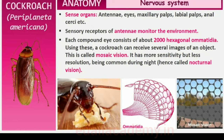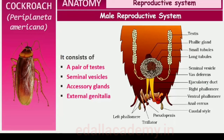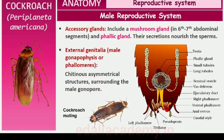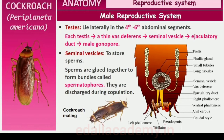Cockroaches are dioecious and both sexes have well-developed reproductive organs. The male reproductive system consists of a pair of testes, one lying on each lateral side in the 4th–6th abdominal segments. From each testis arises a thin vas deferens, which opens into the ejaculatory duct through the seminal vesicle. The ejaculatory duct opens into the male gonopore situated ventral to the anus. A characteristic mushroom-shaped gland is present in the 6th–7th abdominal segments which functions as an accessory reproductive gland. The external genitalia are represented by male gonapophyses or phalomeres, chitinous asymmetrical structures, surrounding the male gonopore. The sperms are stored in the seminal vesicles and are glued together in the form of bundles called spermatophores, which are discharged during copulation.